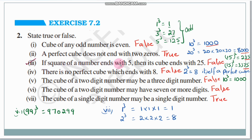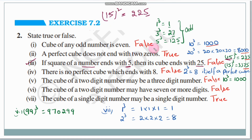Third statement: if the square of a number ends with 5, then its cube ends with 25. Let us take 15. 15 squared is 225 — the square ends with 5. And 15 cube is 3,375. So the cube ends with 375, not 25. The answer is false.